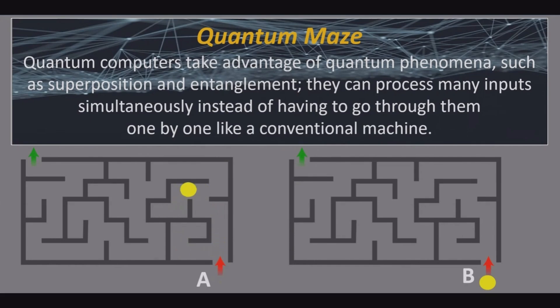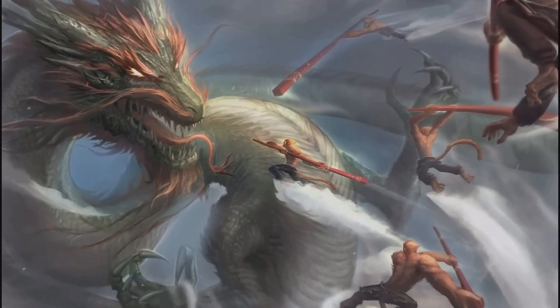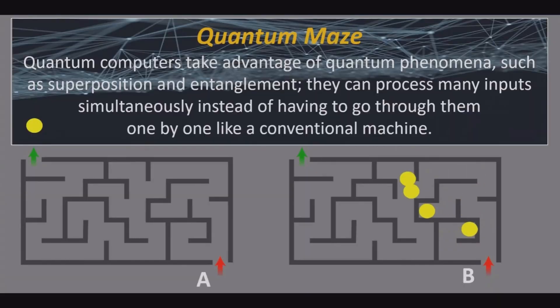미로 문제를 예로 들면 일반 컴퓨터는 미로의 모든 경로를 차례대로 시도해 최단 경로를 찾지만 양자컴퓨터는 마치 손오공이 분신술을 사용하는 것처럼 모든 경로를 동시에 탐색해 가장 짧은 길을 찾아낸다.